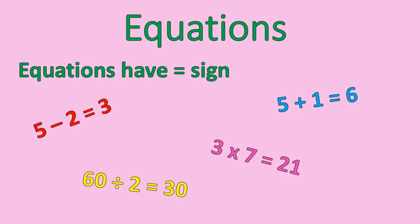Now, when we're asked to check equations, what we're going to do is make sure that the numbers on the left side of the equation are actually equal to the numbers on the right side. All four of these are correct, true equations, but sometimes equations aren't correct.